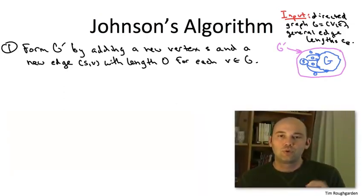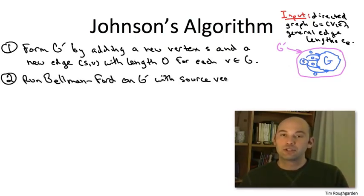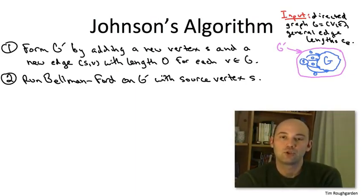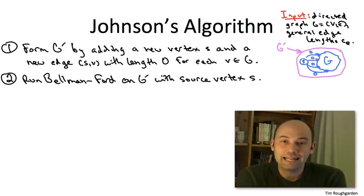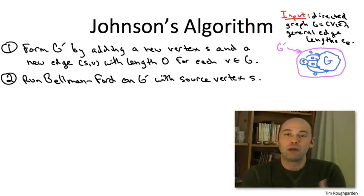Step two, just like in the example, is to run a shortest path computation using the new vertex s as the source. Since the graph G in general has negative edge costs, we resort to the Bellman-Ford algorithm. Bellman-Ford will either correctly compute shortest path distances from s to everybody else, or correctly report that G prime contains a negative cost cycle. If G prime contains a negative cost cycle, that cycle must be in the original graph G, since the new vertex s has no incoming arcs and can't be on any cycle. So if Bellman-Ford finds a negative cost cycle, we halt and correctly report that result.